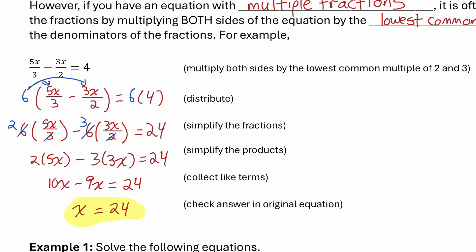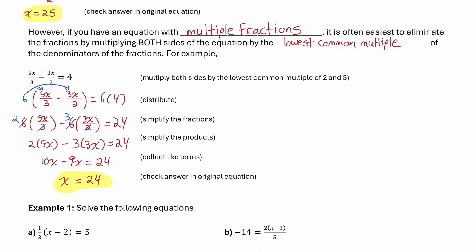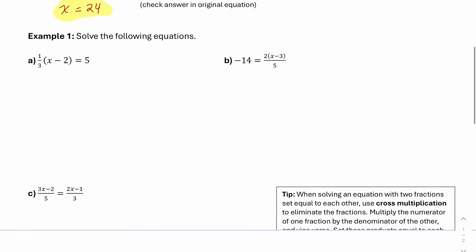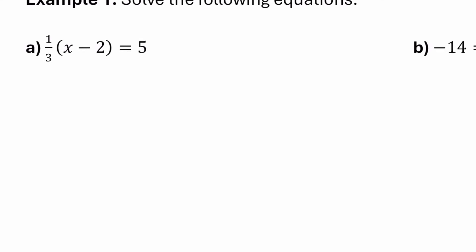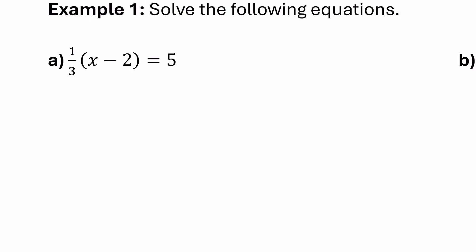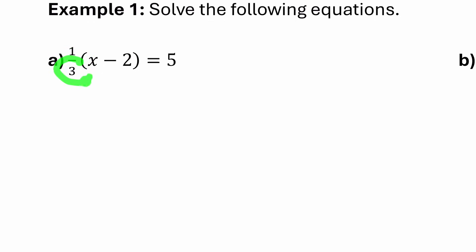Now that you know how to solve equations involving fractions, let's go ahead and practice a few. Let's start with example 1a, where it says solve the following equations. In 1a, there is only one fraction. So if I want to solve for x, I want to isolate x by first getting rid of this fraction, and I can do that by multiplying both sides by whatever the denominator of the fraction is — so multiply both sides by 3.